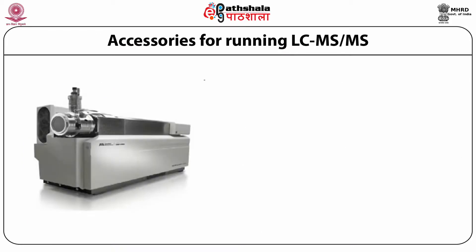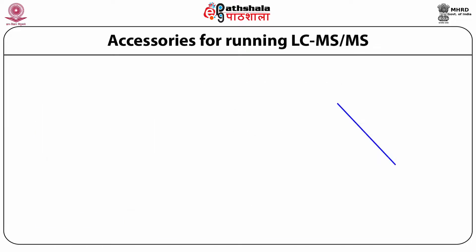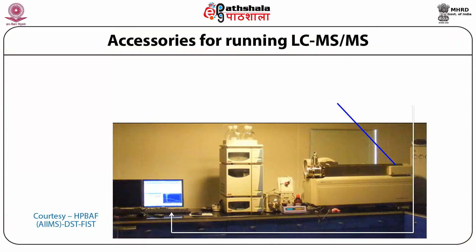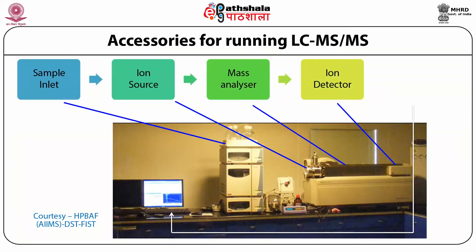The LC-MS/MS triple quadrupole tandem mass spectrometer shown here is the AB Sciex instrument in the speaker's laboratory. It requires nitrogen, zero air, compressed air, a high vacuum pump, HPLC, and a sample infusion assembly. The instrument includes a sample inlet (HPLC), an ion source — electrospray ionization, APPI, or APCI — which converts liquid-state ions to gaseous state, a mass analyzer housing all three quadrupoles, an ion detector, and a microprocessor for data collection and interpretation.